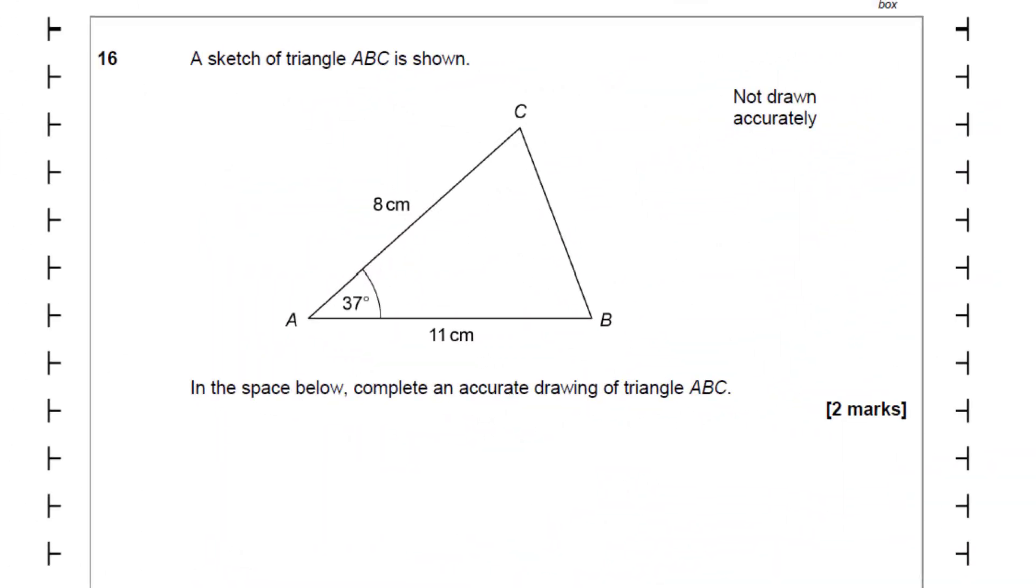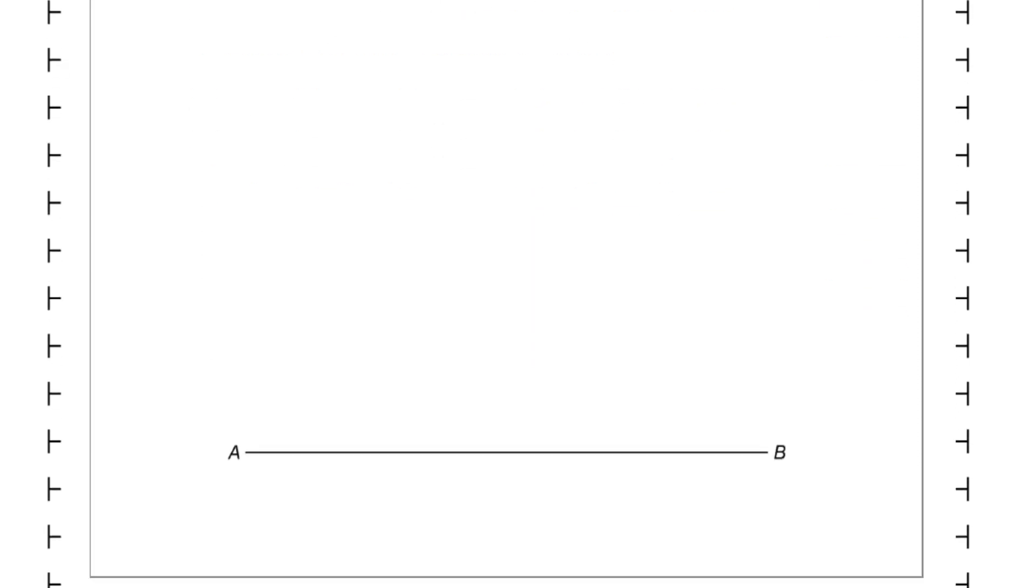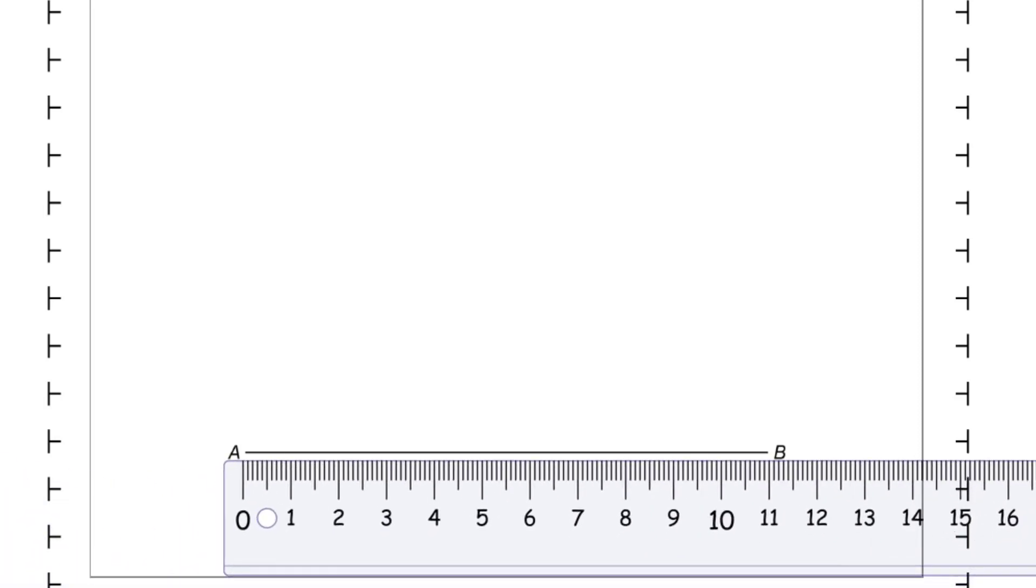Question 16. A sketch of triangle ABC is shown. And we can see a triangle here. There's an angle marked at A, which is 37. We've got one side AB, which is 11. And another side AC, which is 8. And it says, in the space below, complete an accurate drawing of triangle ABC. And if we scroll down, we can see that AB has been drawn for us already. And if your school reprographics department has done a good job, that should already be 11 centimeters long.